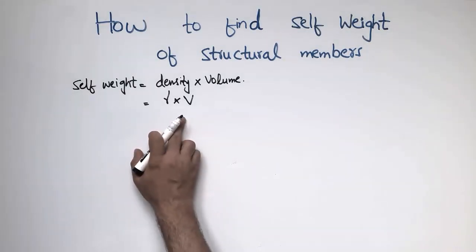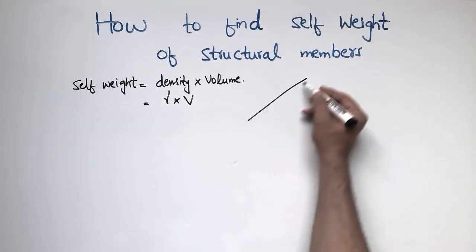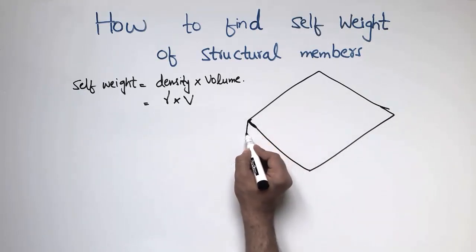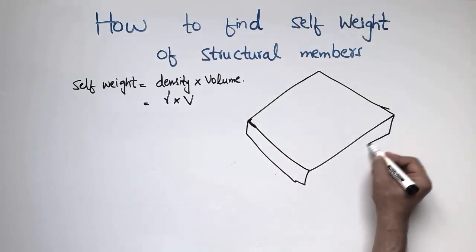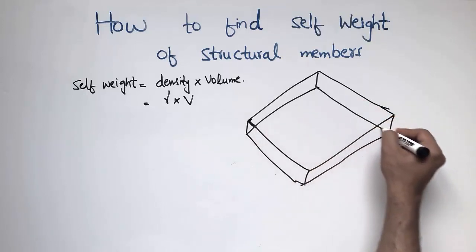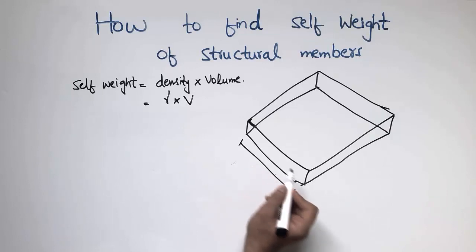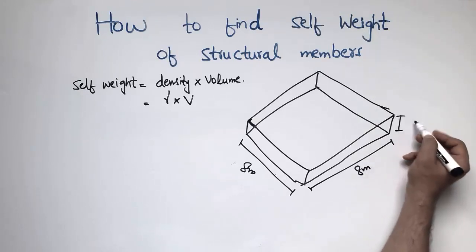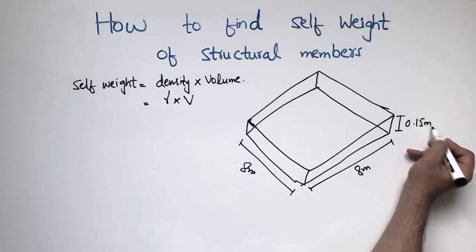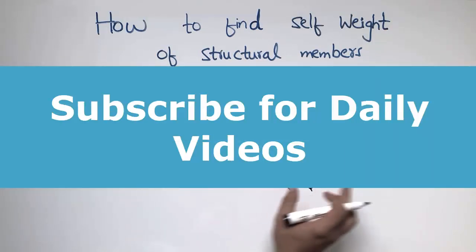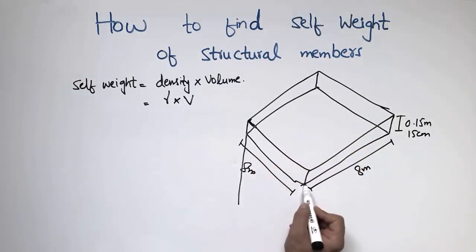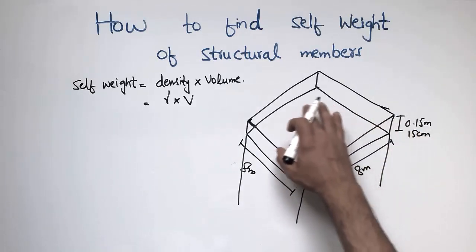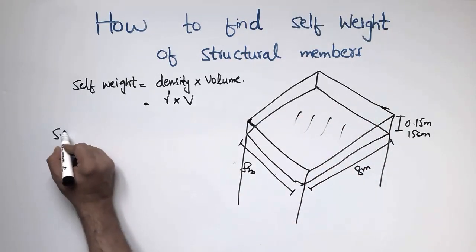I will explain this self-weight with the help of an example. Let's suppose this is a slab and we want to find the self-weight of this slab. Let's suppose that one dimension of the slab is 8 meters, similarly the other one is also 8 meters, and the height of this slab is 0.15 meters or 15 centimeters. This slab is being supported by columns, and we want to know how much self-weight this slab exerts on the columns.